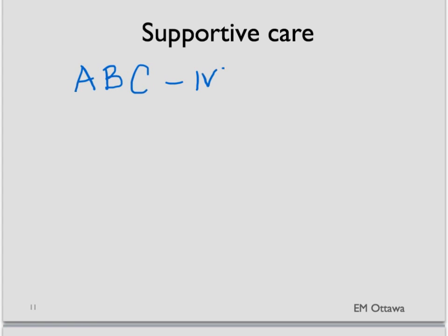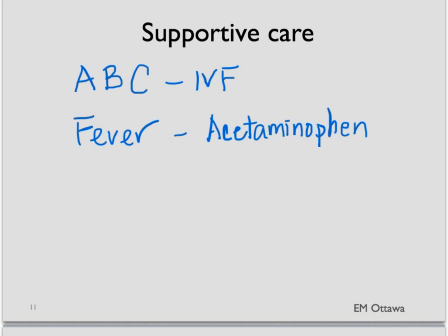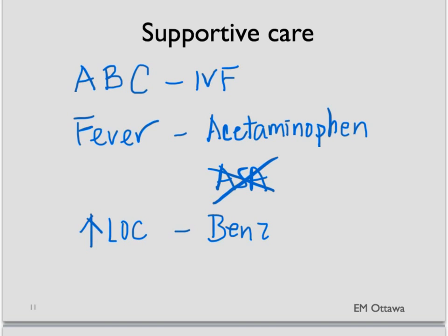In terms of supportive care, these are our usual ABCs. We make sure the airway is patent, and if we need to intubate the patient, we give 100% oxygen. In terms of circulation, we give IV fluids to support a low blood pressure. We treat fever by giving acetaminophen — we do not use aspirin in this case. For agitation and change in level of consciousness, we give benzodiazepines, which will also work for seizures.